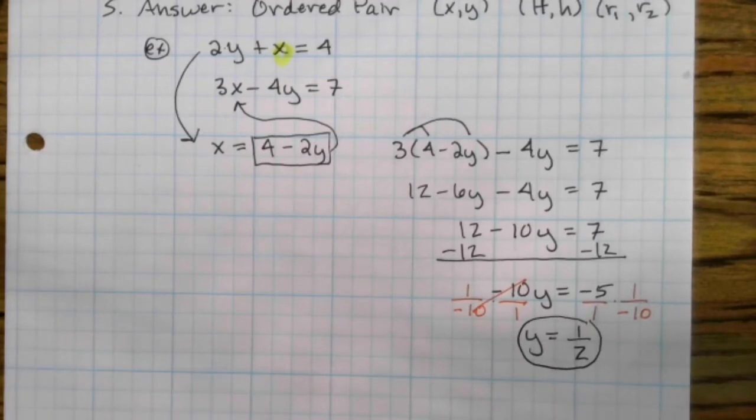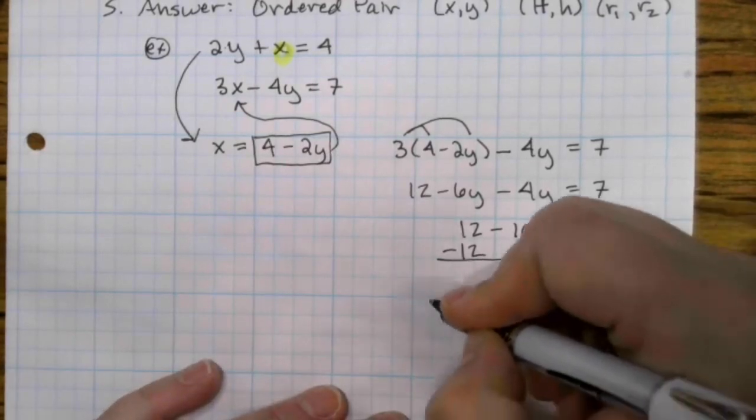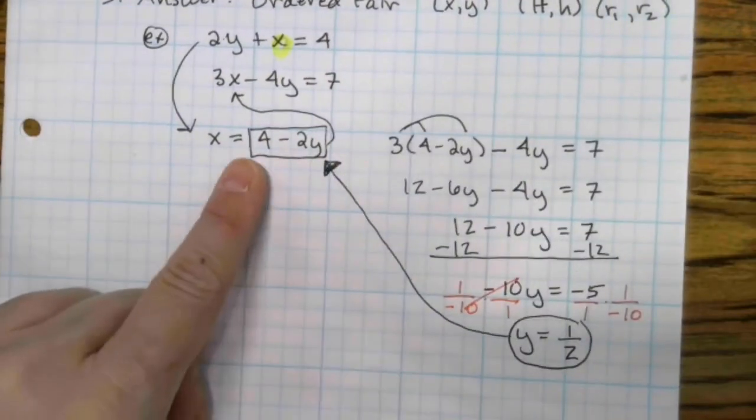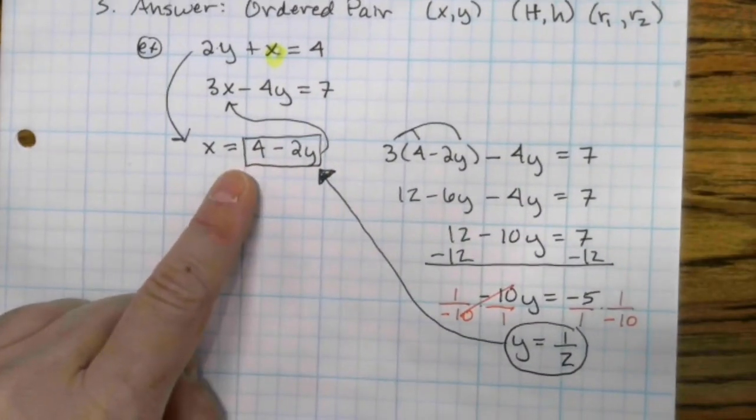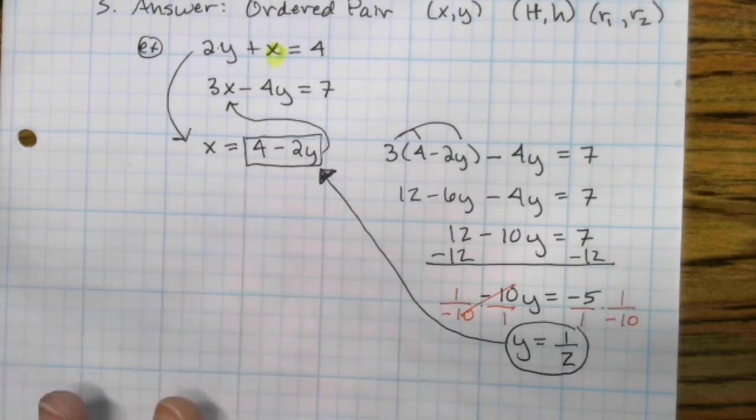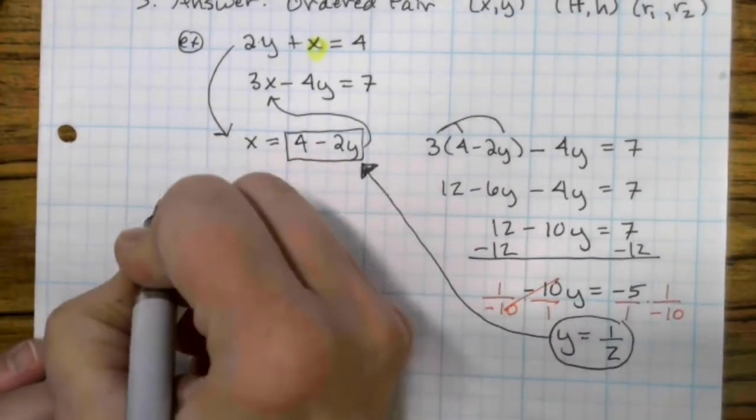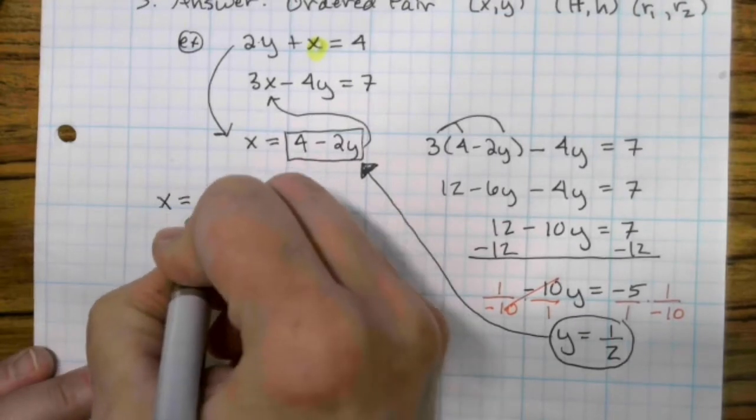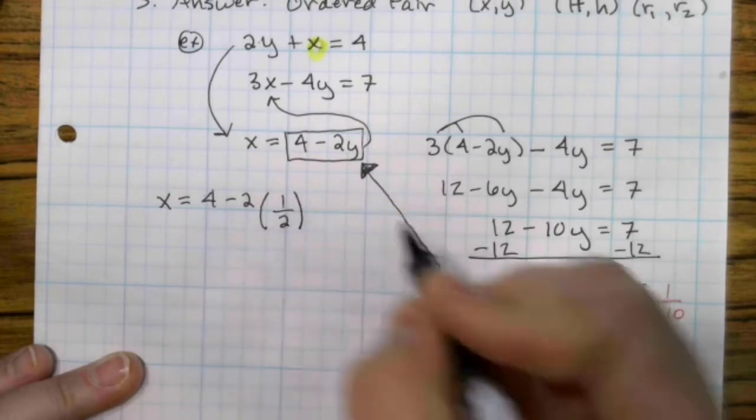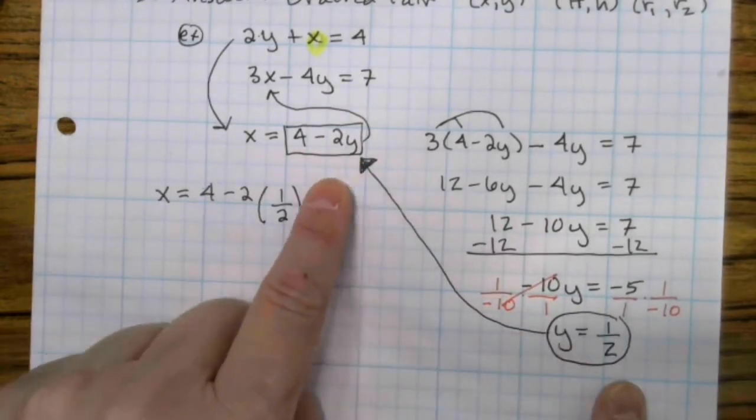Now that we have y, we're going to take our answer and we're going to substitute it back into the original equation. If you put a box around the first equation that you solve, it's much easier to figure out where you need to put your answer. It's just a nice visual cue. So let's sub that in. 4 minus 2 times a half. Again, I'm using my parentheses when I replace the y.